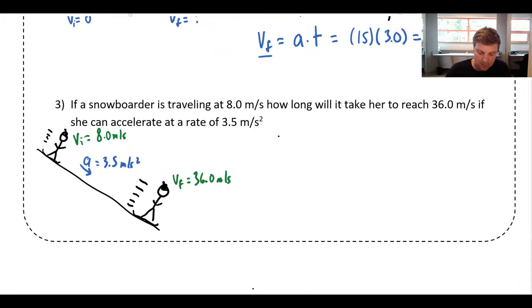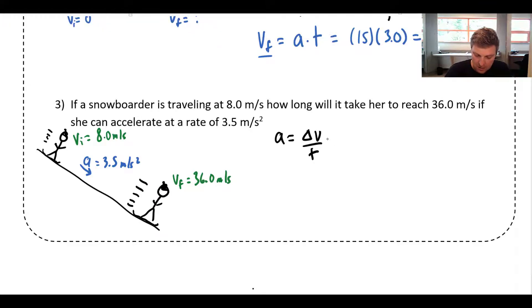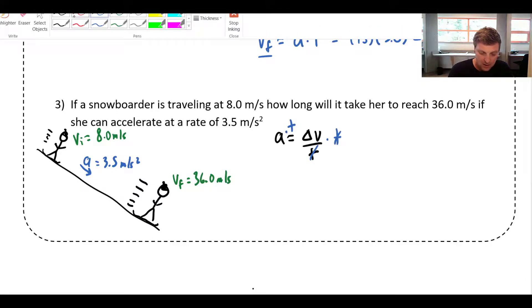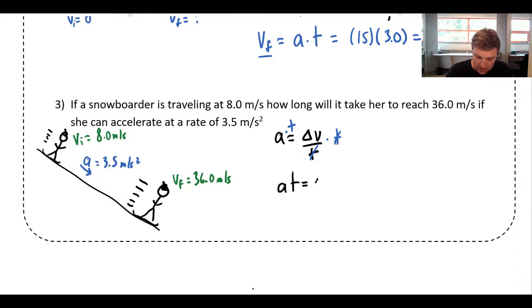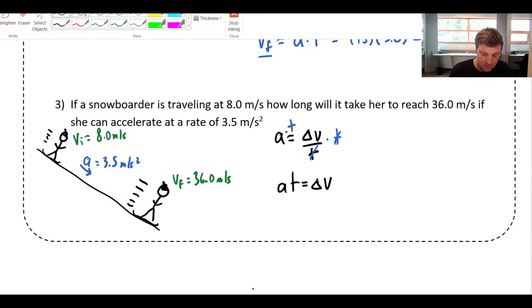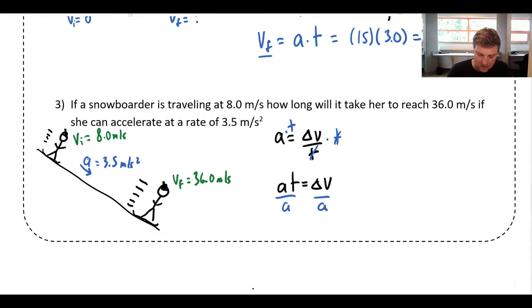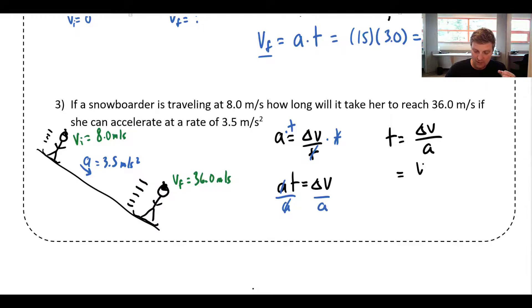Using a = Δv / t and isolating t algebraically: multiply both sides by t, then divide both sides by a, giving t = Δv / a. And since Δv = v-final minus v-initial, this becomes t = (v-final − v-initial) / a.